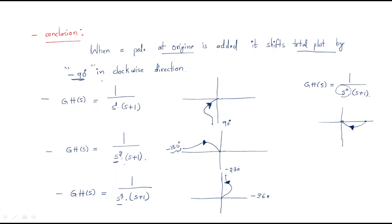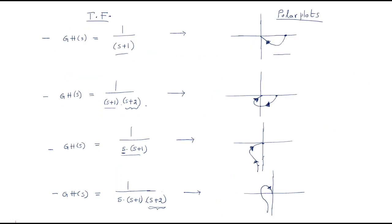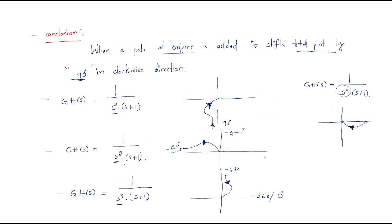This conclusion holds for adding a finite pole as well. For adding a pole at the origin: for s⁰ it looks like the base case; for s¹ it shifts so it starts at minus 90 and ends at minus 180; for s² starting is minus 180 and ending is minus 270; for s³ starting is minus 270 and ending is minus 360 (0 degrees). These are the variations of polar plots.